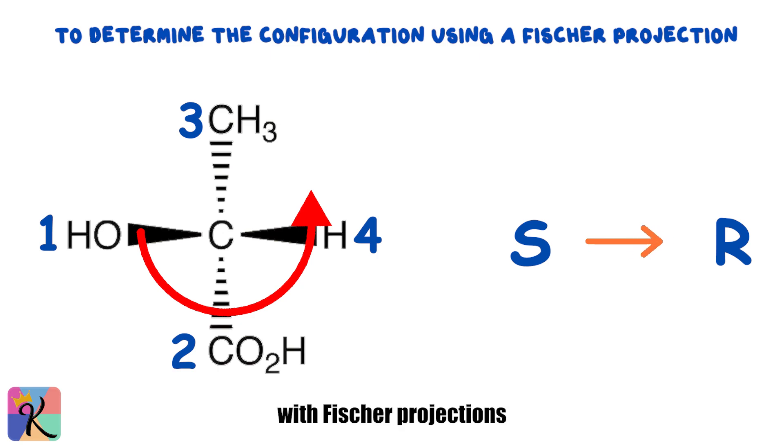A handy trick with Fischer projections. If the lowest priority group is on a horizontal line, you can determine R or S as usual, then take the opposite of what you find. This is because horizontal lines point out, while we generally want the lowest priority to point in.